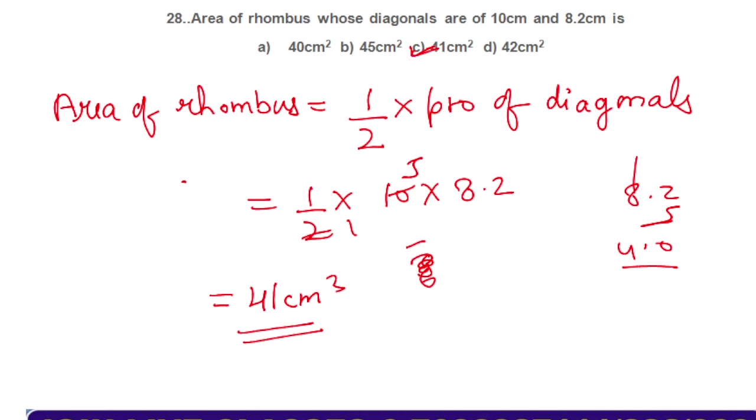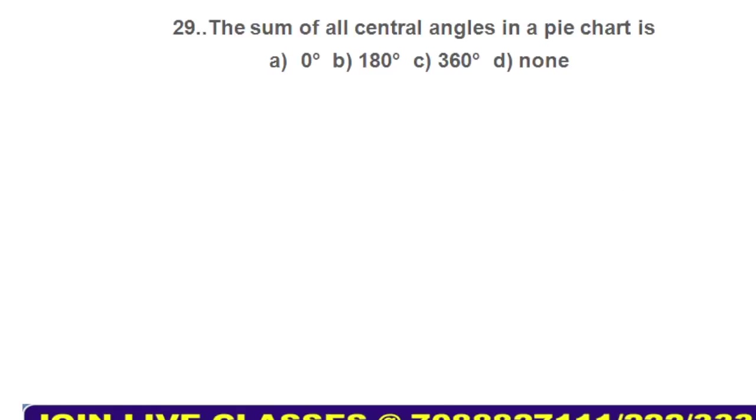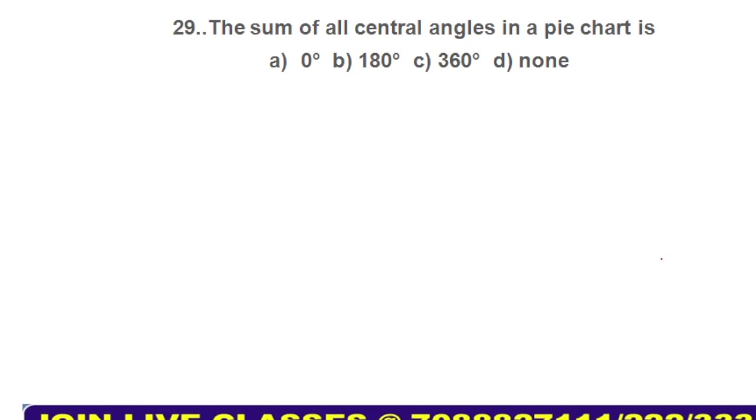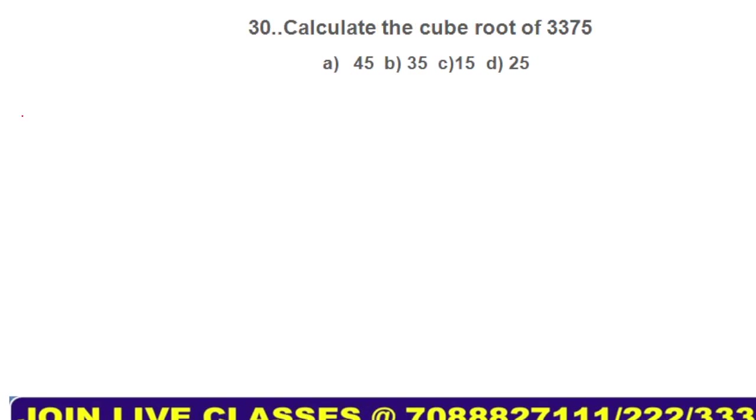Coming back to the next question. Sum of all central angles in a pie chart. A complete pie chart represents how much degree? It represents 360 degrees. So a complete pie chart represents 360 degrees. The answer comes out to be option number C.